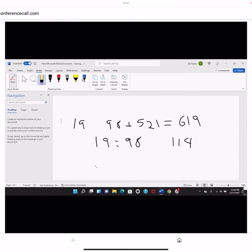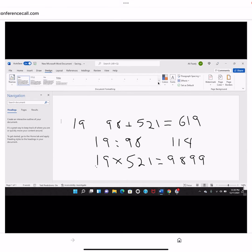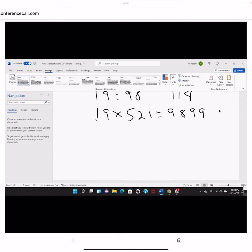19 times 521 is equal to 9899. 9899 is the count of Alef Lam Mim in chapter 2.